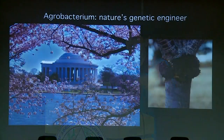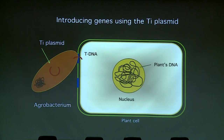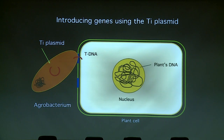Agrobacterium is a soil bacterium that has developed a trick of transferring a piece of DNA into a wounded plant cell. You see this where gardeners have cut off dead parts of a tree and wounded it in the process. It has the genetic trick of turning that cell into a tumor.